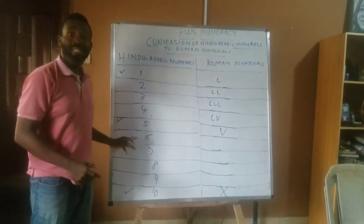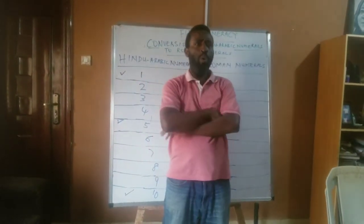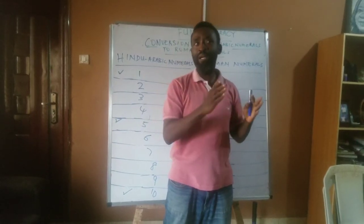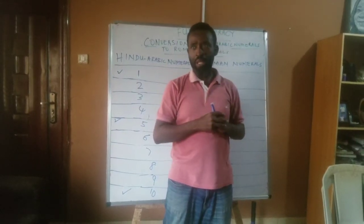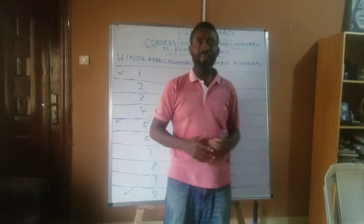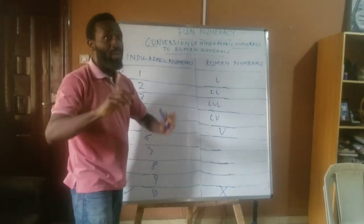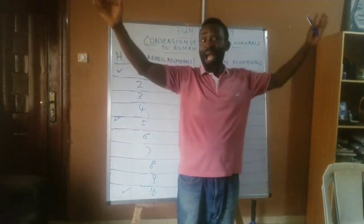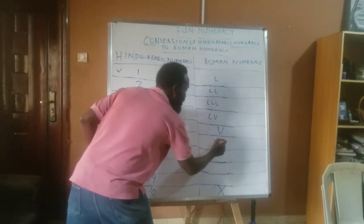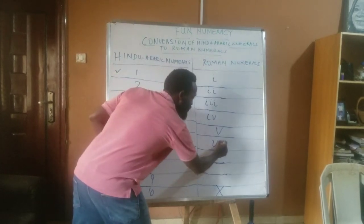For number 6, we have the big letter V. What do you think we should do? 6 is one number after V. Do we put the I before V or after V? Anyone who says V and I — thumbs up, you got it! That means we have V plus I, and that gives us VI.